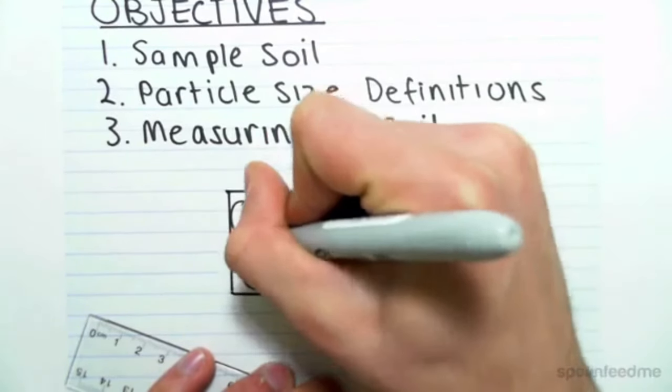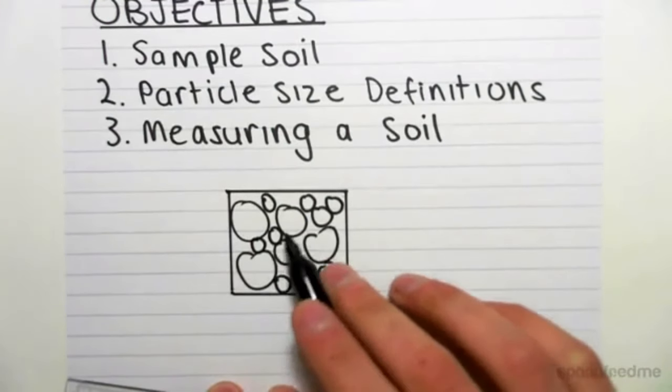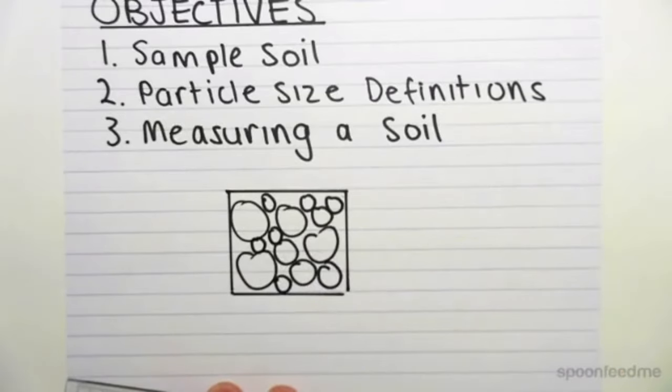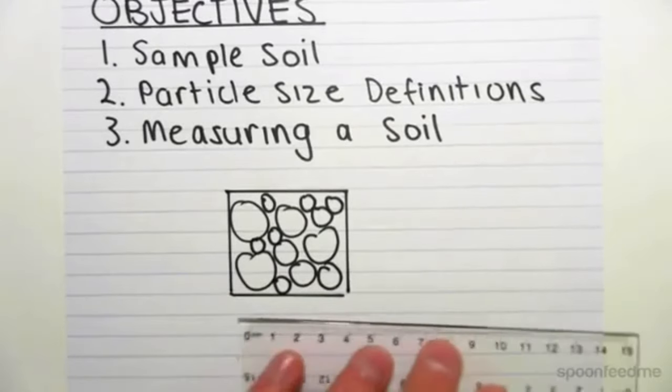In soil mechanics, we're not so concerned about the chemistry of the soil, but what we are concerned about is this different distribution of particle sizes, and particle size is actually the key parameter which defines different soils for us.